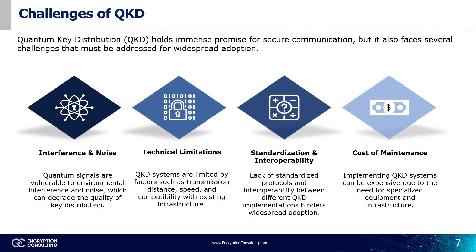While quantum key distribution offers unparalleled security, it faces hurdles that need to be addressed before widespread adoption. Interference and noise: QKD relies on a delicate quantum signal. Unfortunately, these signals are susceptible to disruptions from environmental factors like fiber-optic imperfections, background noise, or even weather conditions. This interference can corrupt data and compromise the key exchange process, leading to unreliable encryption and potential security breaches. Researchers are actively developing techniques to mitigate these effects, including advanced error correction protocols and signal amplification strategies that minimize noise without compromising the quantum nature of the signal.